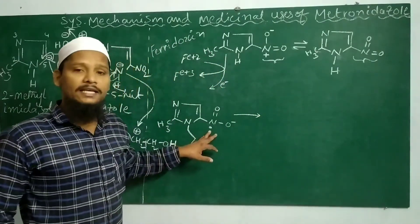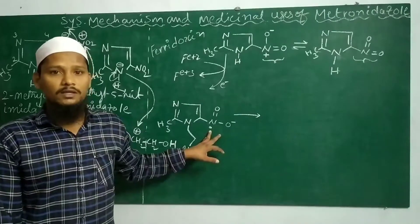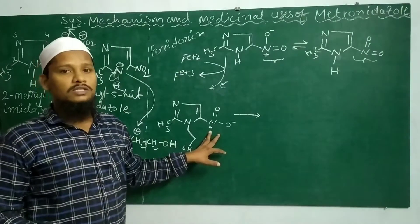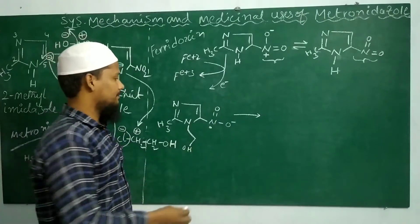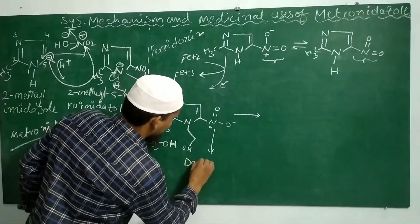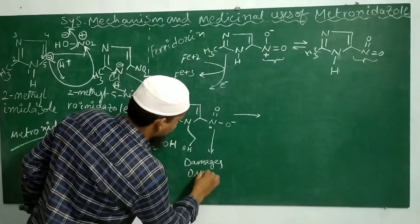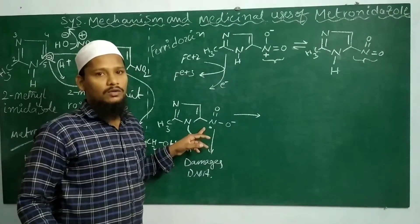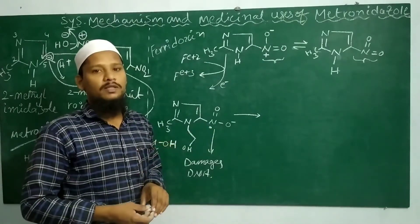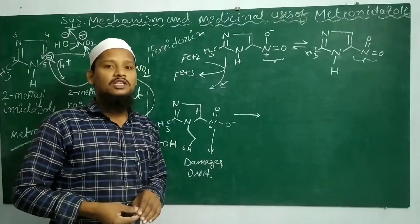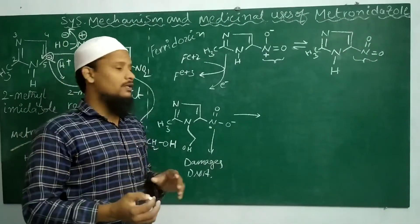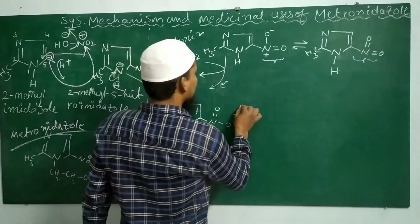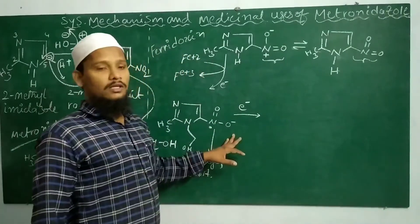The nitroimidazole radical anion contains an unpaired electron. To become stable (pair its electron), it steals electrons from DNA, causing DNA damage. Specifically, the nitro radical anion steals electrons from the nitrogenous bases of the nucleotides in the DNA strand.